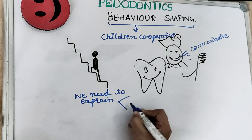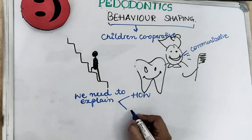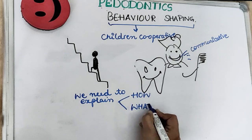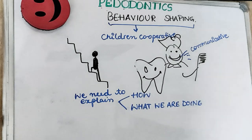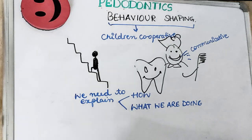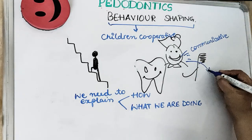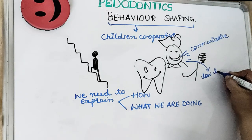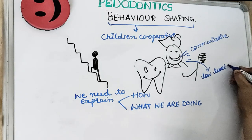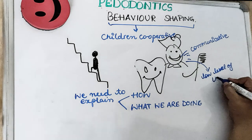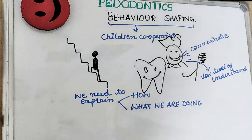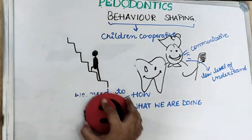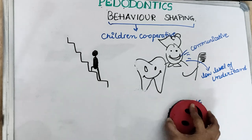Therefore, we need to explain to the child the procedure — how and what we are doing. A child has a relatively low level of understanding, but we can make them understand using euphemism.